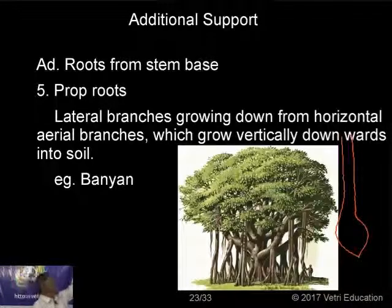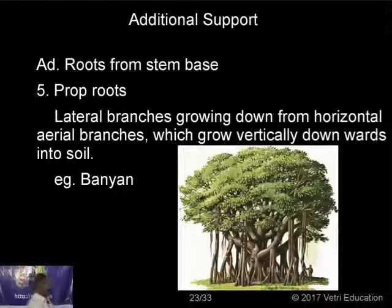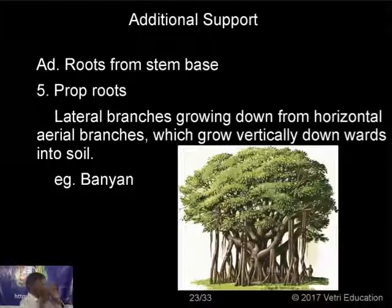Next, we have adventitious roots from the stems. The lateral branches grow, and from them some roots grow gently downwards and enter into the soil to give extra support. Since these look like pillars, they are called prop roots. 'Prop' means pillar or support. You can find prop roots in the banyan tree.